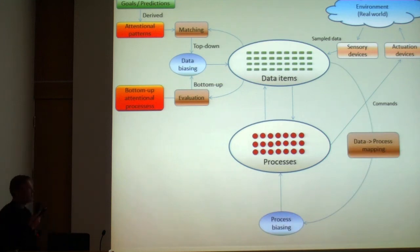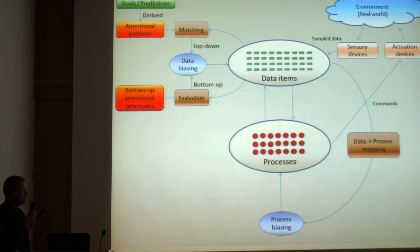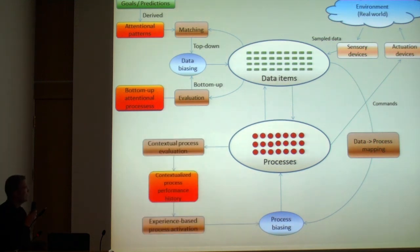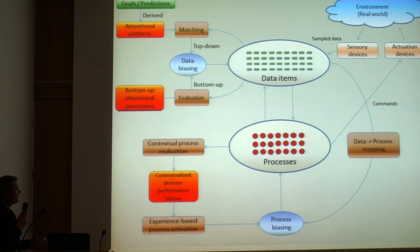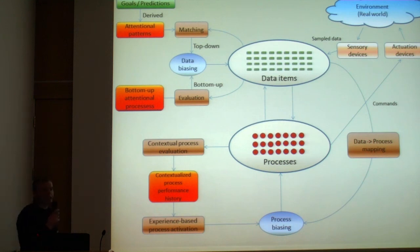For the process side, there are two components: first, we give activation to processes that fit the currently available data — the most trivial step. Then we evaluate system context and, based on performance history, compare current goals to previously achieved goals. When sufficiently similar goals are found and a process is known to have been responsible for achieving them, we use experience-based process activation to increase activation for processes likely to be useful now. That's an overview of the mechanism.